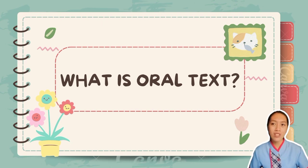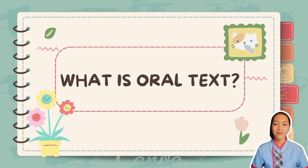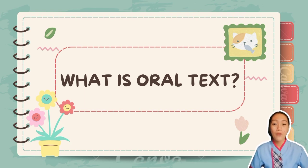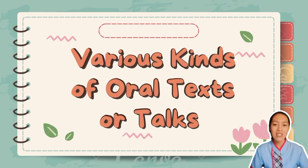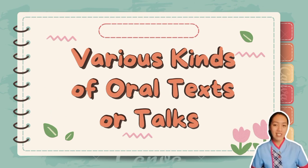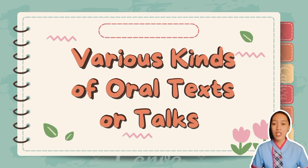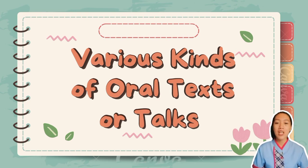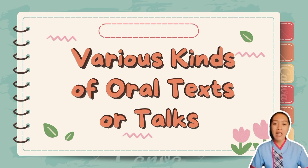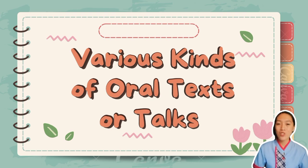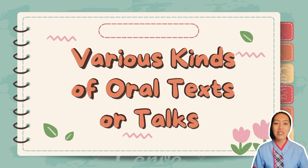Now let's define what an oral text is. An oral text is a form of oral communication which is the process of conveying messages by the use of mouth. The functions or purposes of communication can be effectively realized using different kinds of oral texts, or what Lack calls talks. The talks may be small talk, light control talk, heavy control talk, search talk, and straight talk.